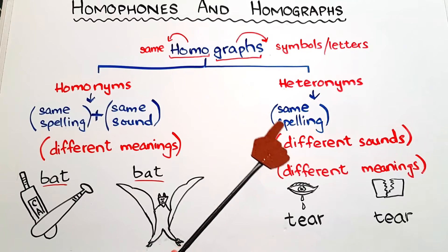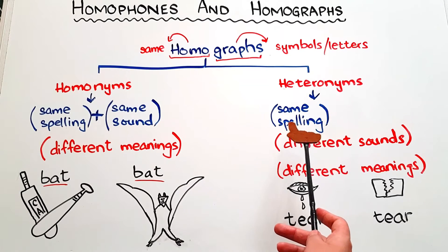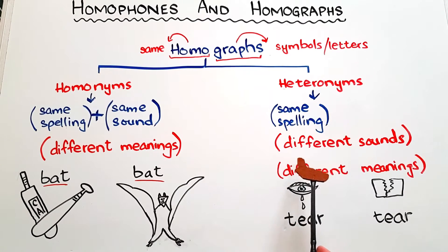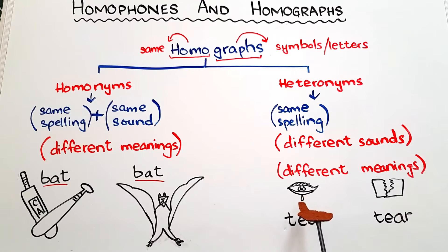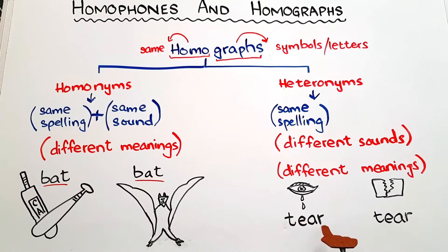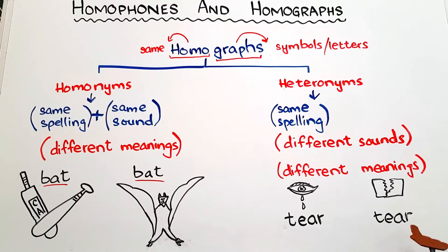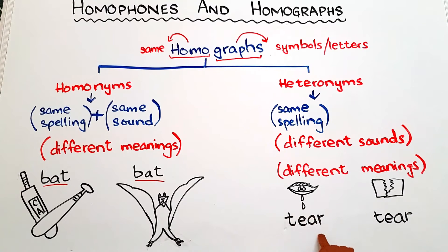Whereas in heteronyms, we only have the same spellings, but both the pronunciation and the meanings are different. For example, the word T-E-A-R: if you want to say the liquid that we release from our eyes, the pronunciation is 'tear'; and if you want to say something that is ripped off, this word is pronounced 'tear'. This is T and 'ear' — tear — and this is T and 'air' — tear.